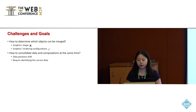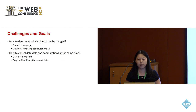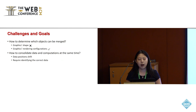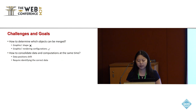To achieve this goal, we face several challenges. The first issue is determining which objects can be merged. The feasibility of merging diverse graphics into a single rendering pipeline hinges not on the graphics shape, but rather on the rendering configurations. Another challenge is consolidating data and computations simultaneously, as data positions from multiple objects in the buffer can shift after merging, requiring identifying the correct data during calculations.